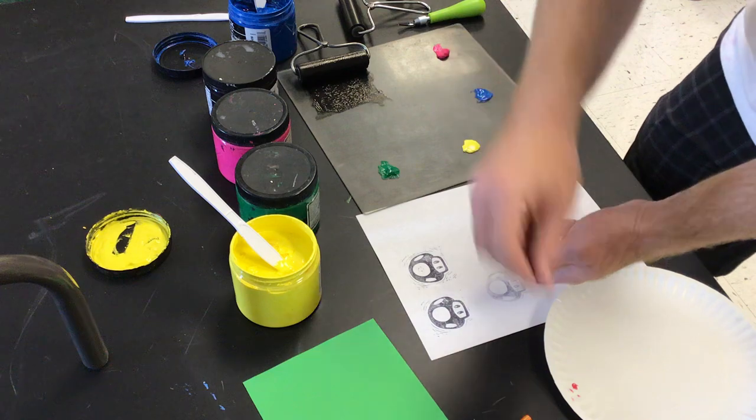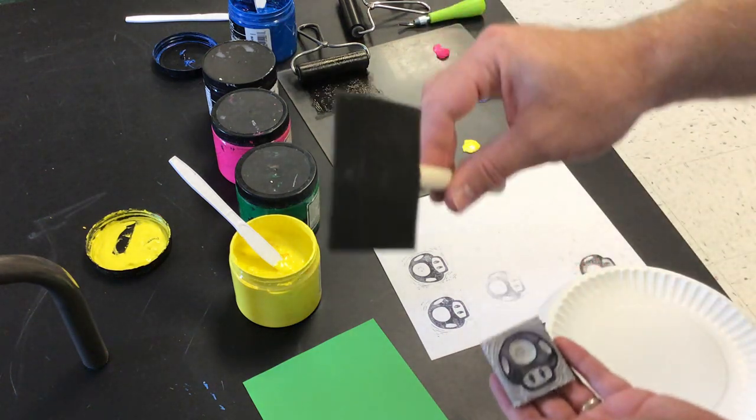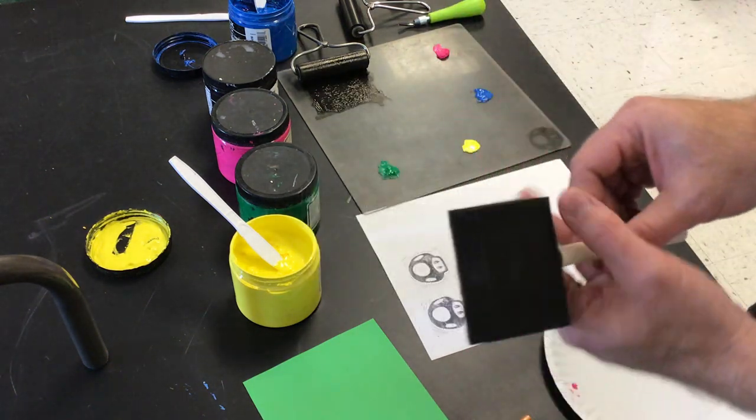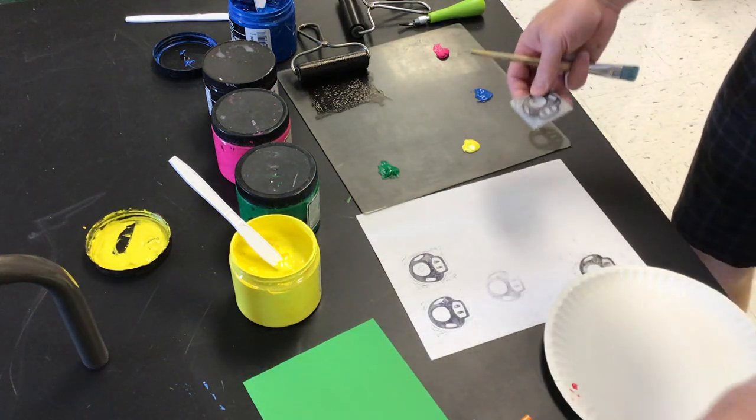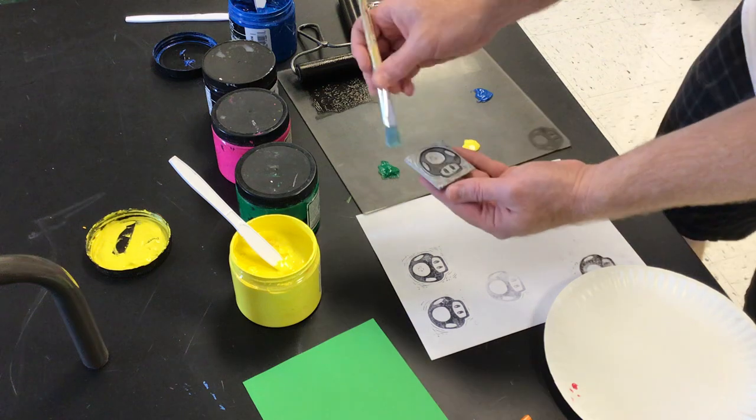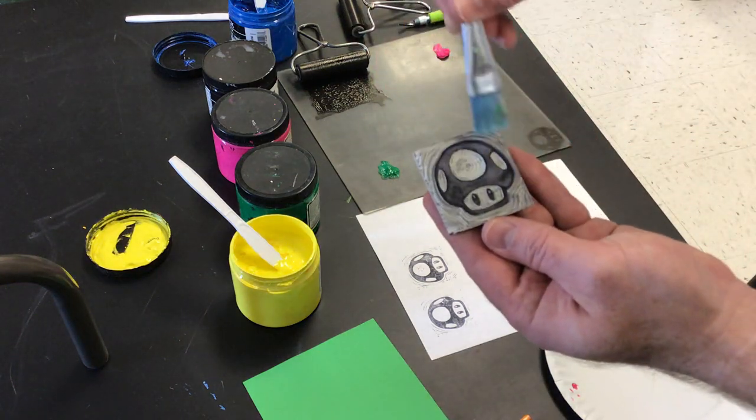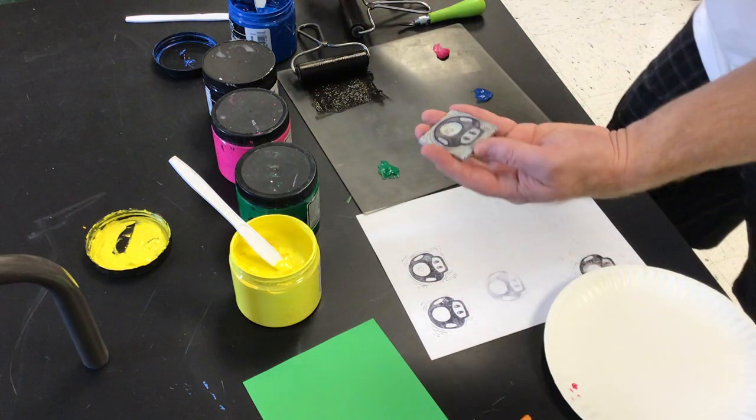Another way to do this is to use a big flat paintbrush. You can take some paint and paint it onto your block and then print it. That totally works.